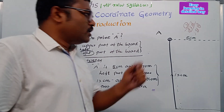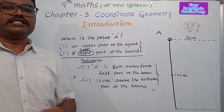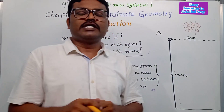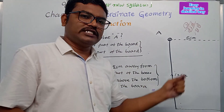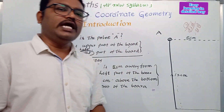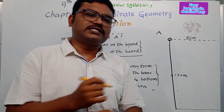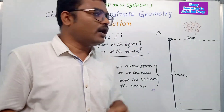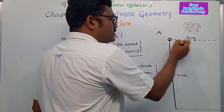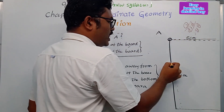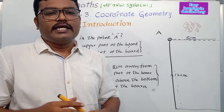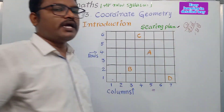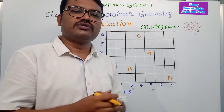Now let's consider one more example. When we need to describe any point in a plane, we need two references or two lines. Here is one activity: preparing a seating plan of your own class. Here we have an example of a model class.